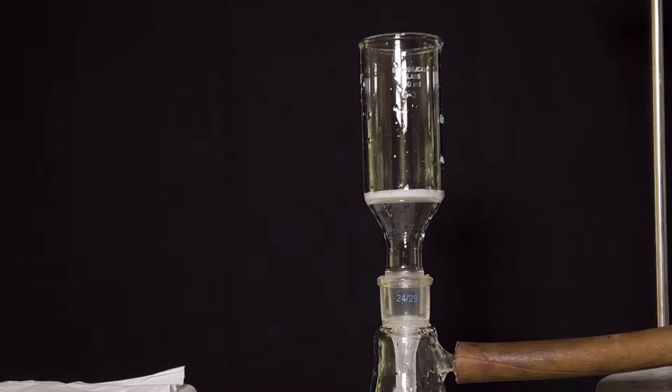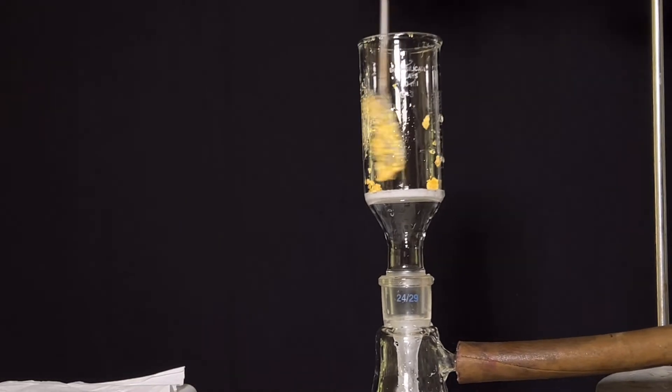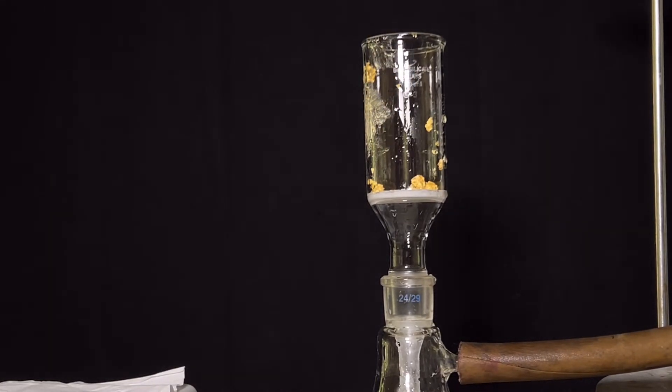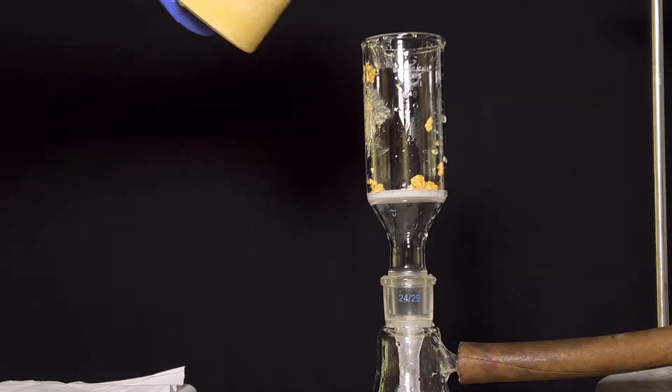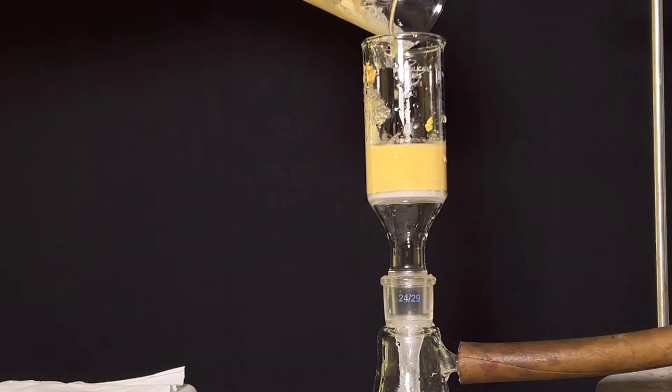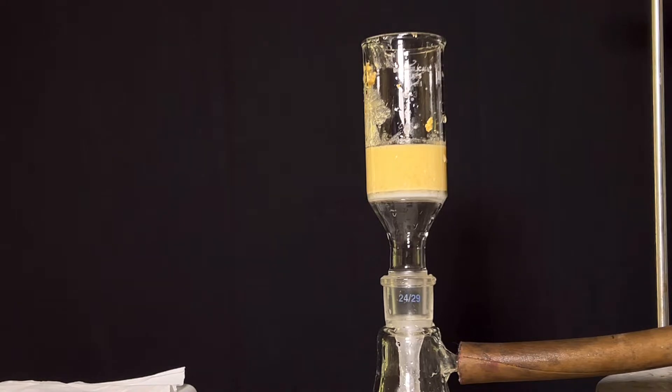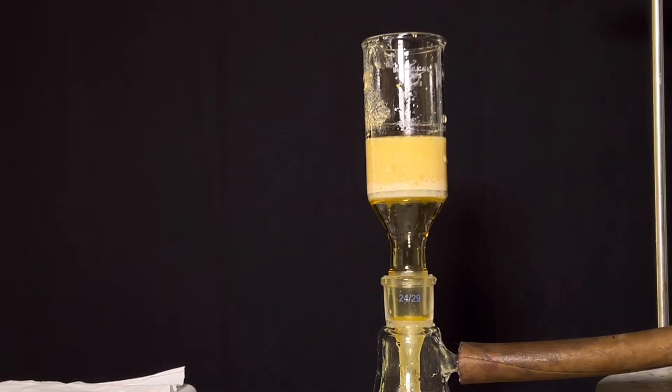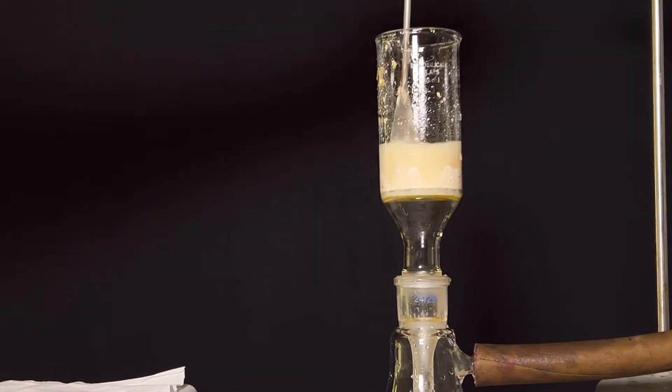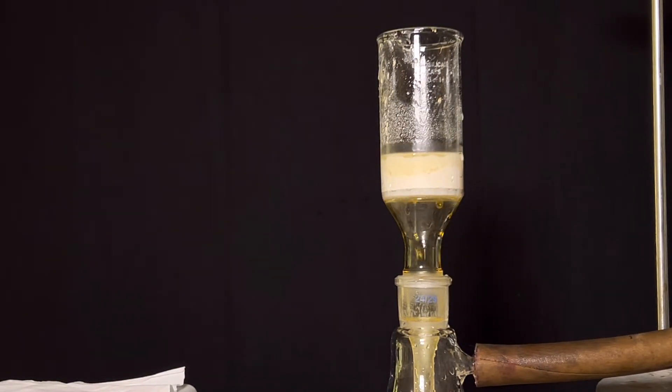Now the contents of the beaker is filtered by vacuum filtration. The contents are very sticky, so I had to use ice cold water to transfer everything to the Buchner funnel and also to wash down the solid stuck onto the spatula. Wash the solid with ice cold water inside the Buchner funnel itself to remove all the water soluble impurities and the compound was filtered.